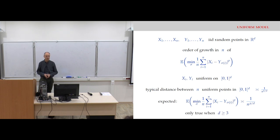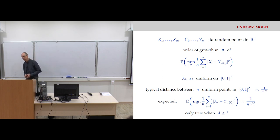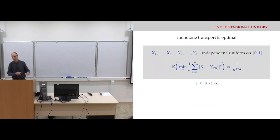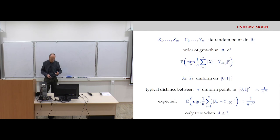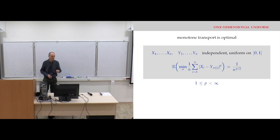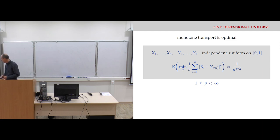This is only true in high dimension — it is not the case in dimension one and it is not the case in dimension two. Dimension one is actually rather easy because you have explicit rearrangement inequalities on the real line, and you see that the expected cost is actually the square root of what is expected. We said 1/n^{p/d}; when d=1 you expect 1/n^p, but it's only the square root, so it's much bigger. Everything is explicit in the one-dimensional case.